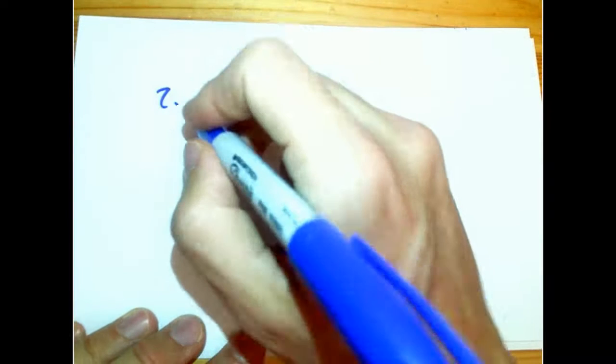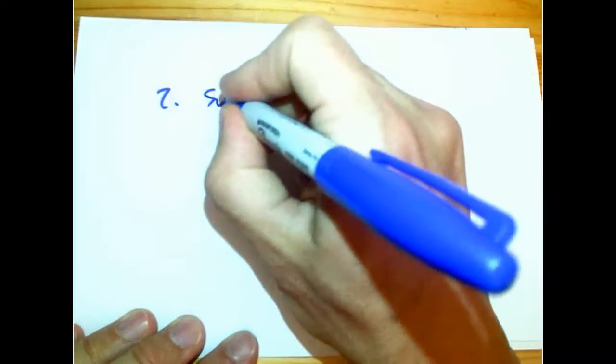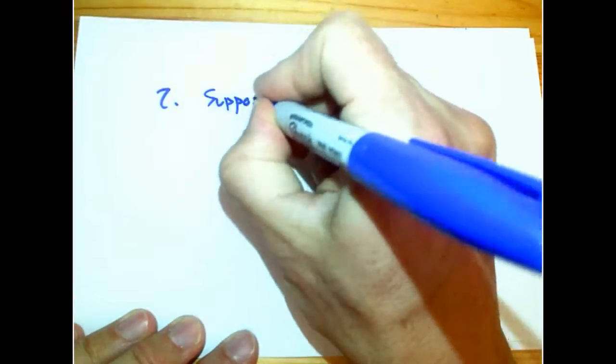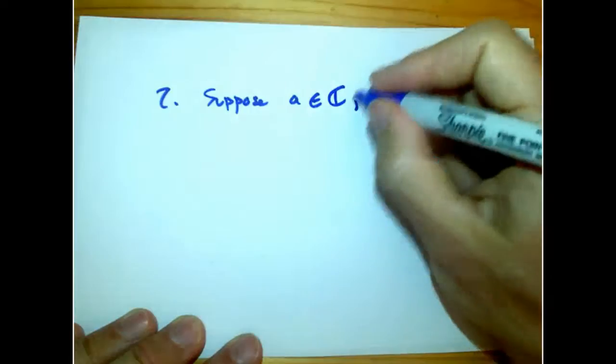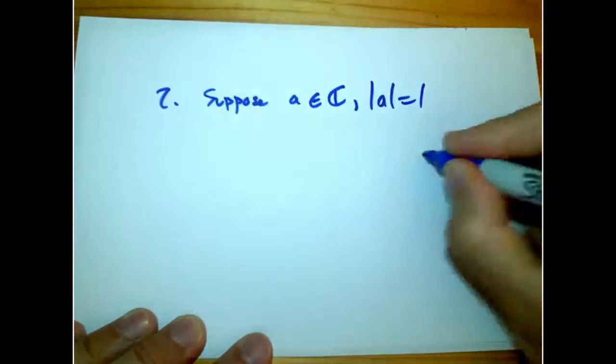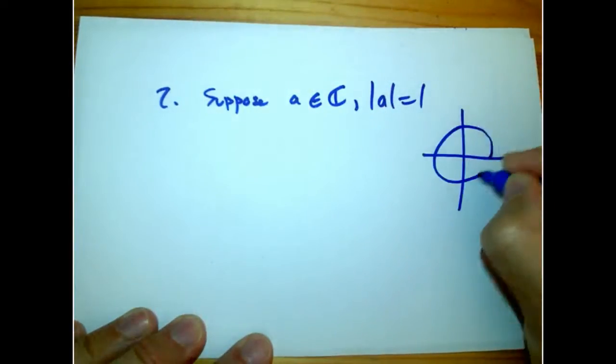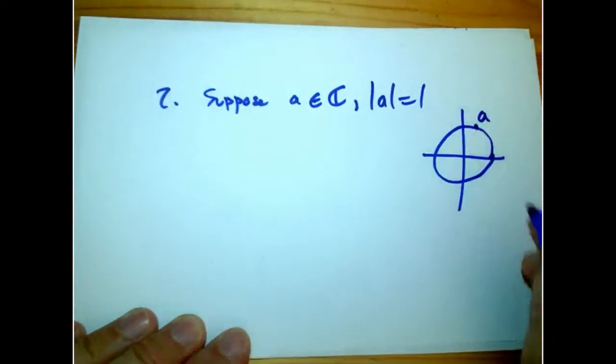Now, let's suppose we look at the special case. a's not a real number anymore. a's in the complex numbers, but the magnitude of a equals 1. So that's on the unit circle. Here's a.